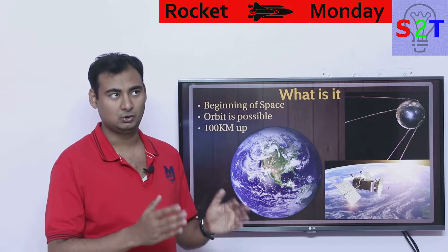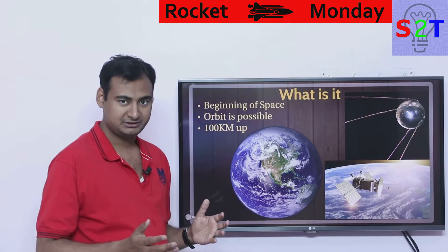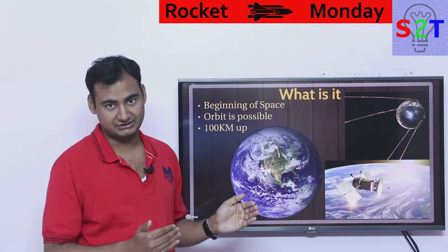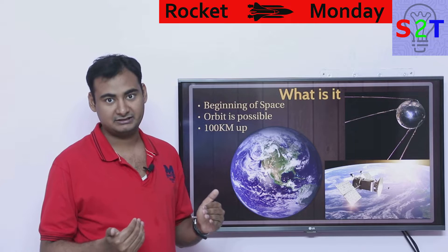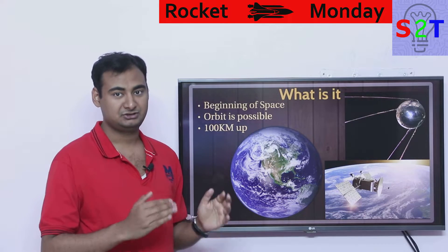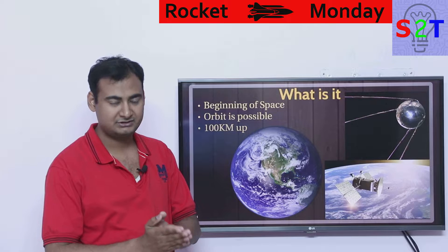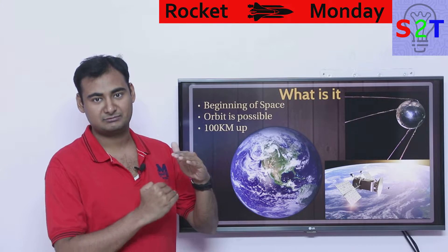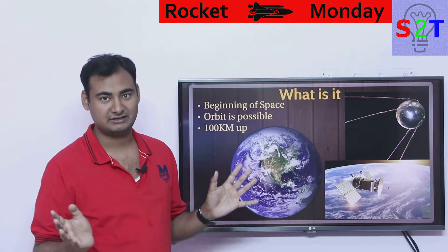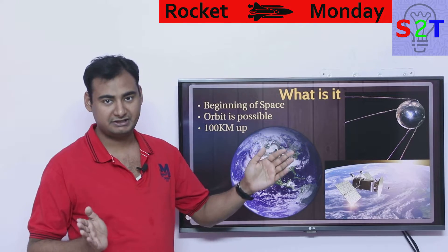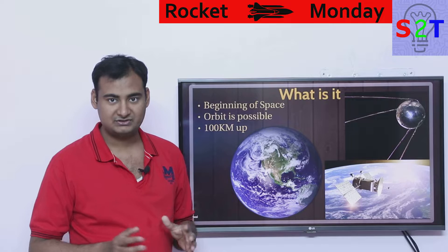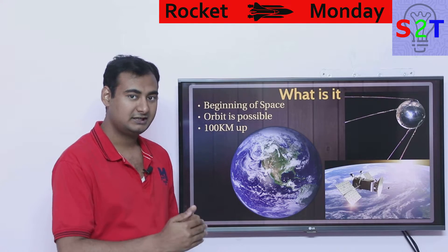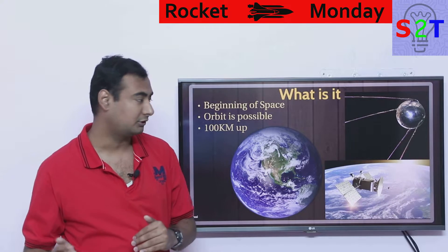So what the heck is low earth orbit? It's a very simple thing. It is the beginning of space — the first place you reach when you want to go to space. Below it you are still in Earth's atmosphere; above it you are in space. Now there is no absolute line that describes it. It's not like till 100 km there is no atmosphere and after 101 km there is pure vacuum — there is a giant gradient. But for our purposes we define it as 100 km, or what we call the Karman line. If you cross that, you are in LEO, low earth orbit.